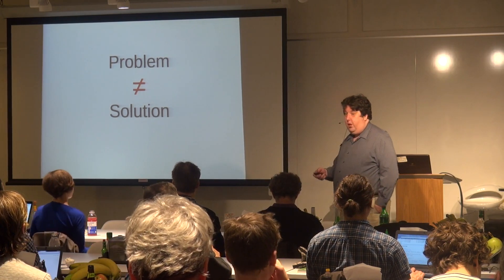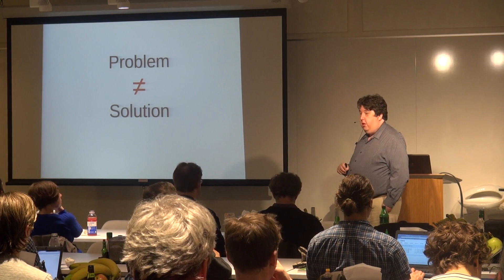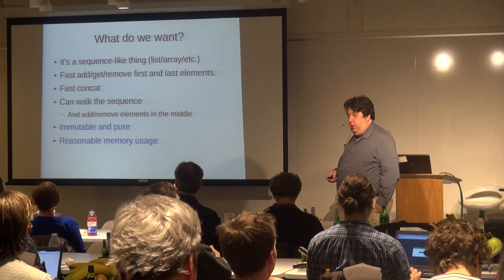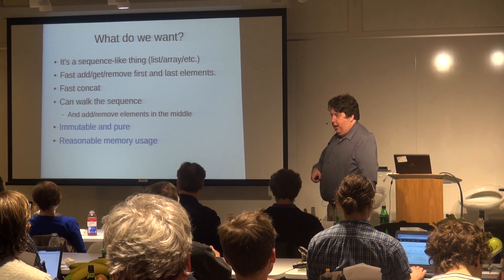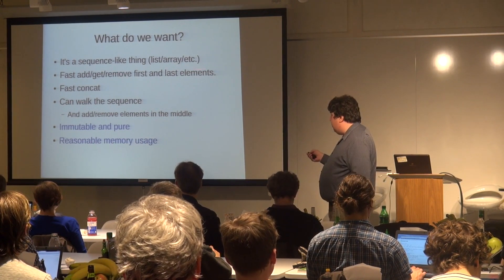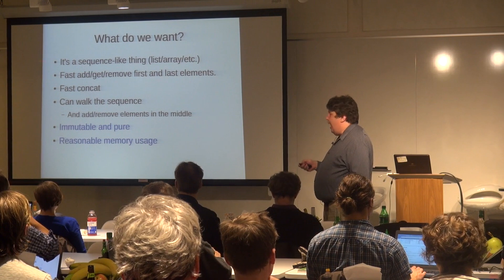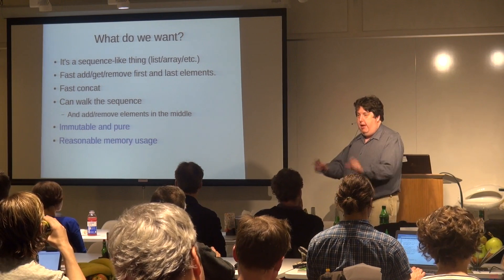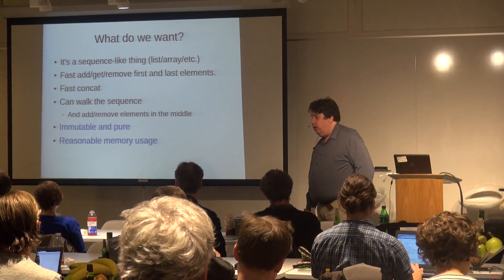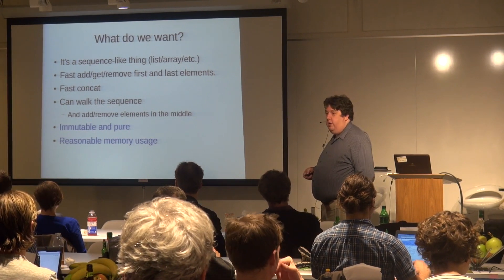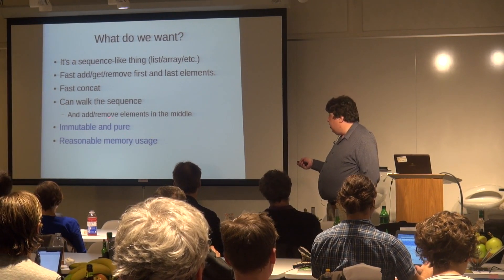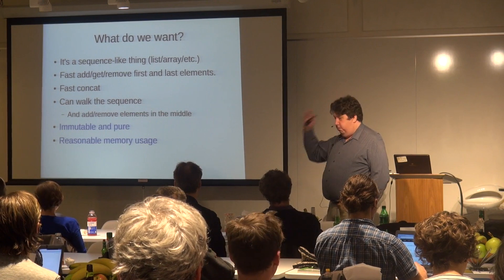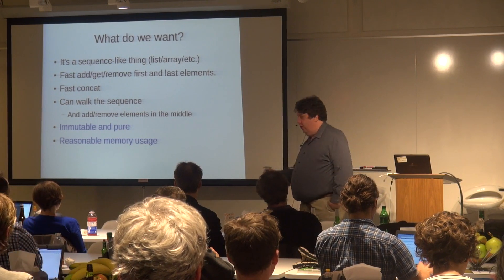What is the problem we're actually trying to solve? Let's stop thinking about doubly-linked lists for a minute. What is it we're actually trying to do? Dear Santa, I would like a data structure that does all of this: it's a sequence-like thing; I want very fast add, get, and remove of both the first and last elements; I want fast concatenation — slam two of these together and make one big one; I want to walk the sequence and add and remove stuff in the middle. And I'd also like it to be immutable, pure, and have reasonable memory utilization.